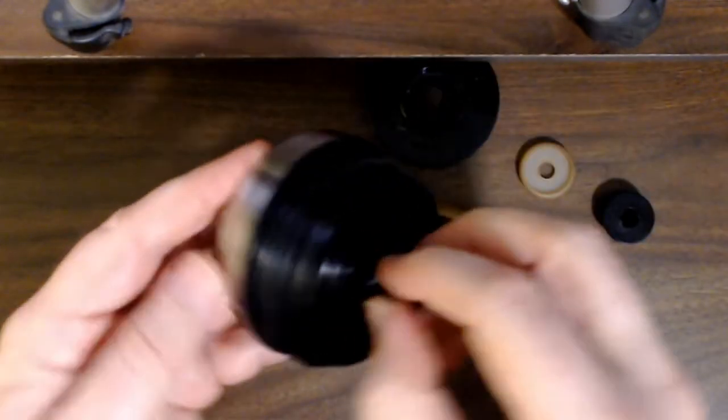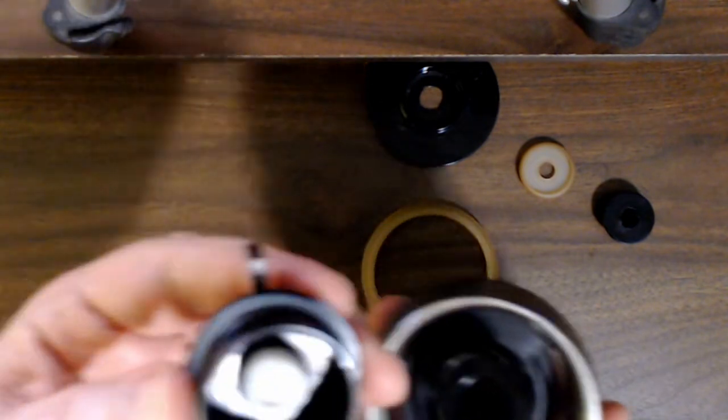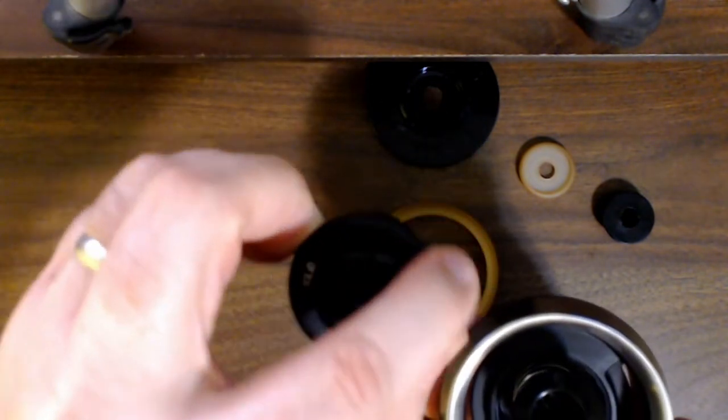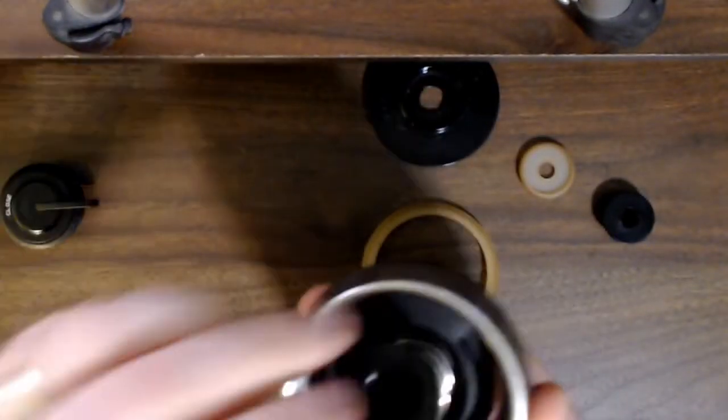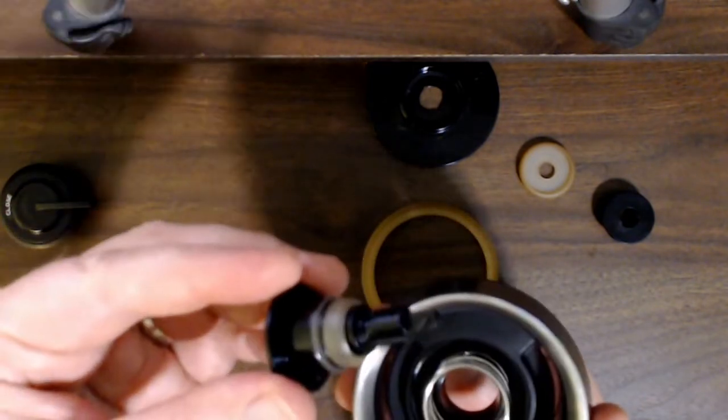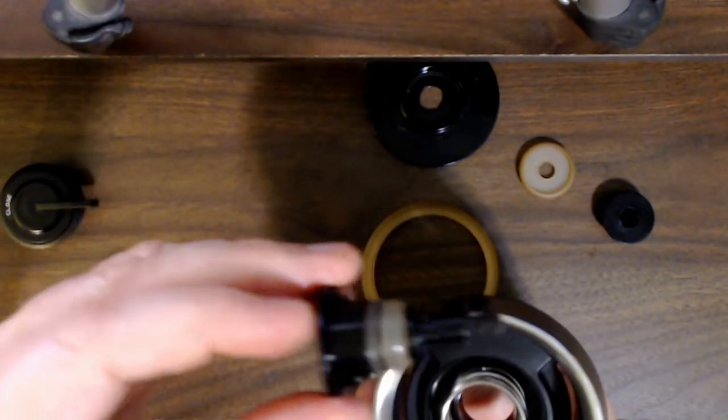Now this top section comes out, so you'll notice the rotating part that says open and closed. Here's that center plunger bit and it's got two more silicone rings on it.